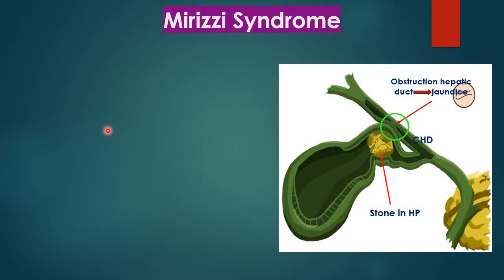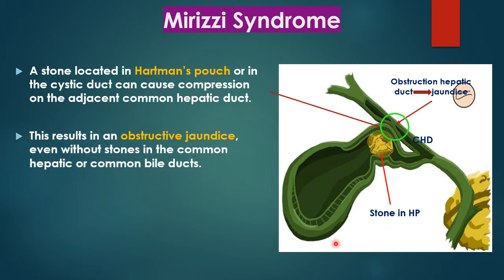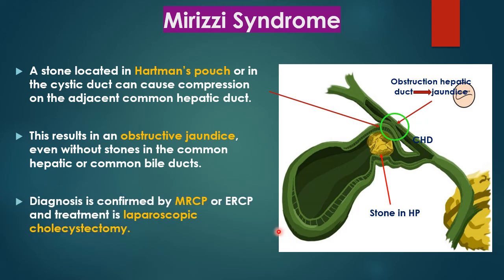Mirizzi syndrome: a stone in the neck of Hartmann's pouch or the cystic duct causes obstruction of the adjacent common hepatic duct due to chronic inflammation, resulting in obstructive jaundice. Diagnosis is usually confirmed by MRCP or ERCP. The treatment, once confirmed, is laparoscopic cholecystectomy.